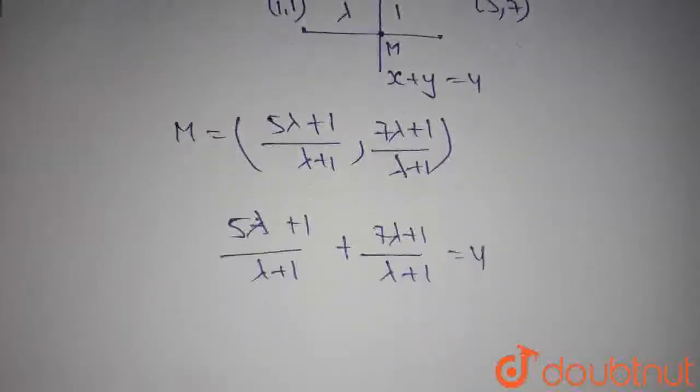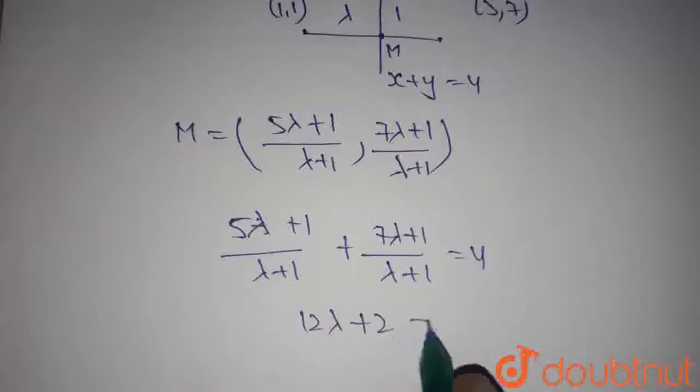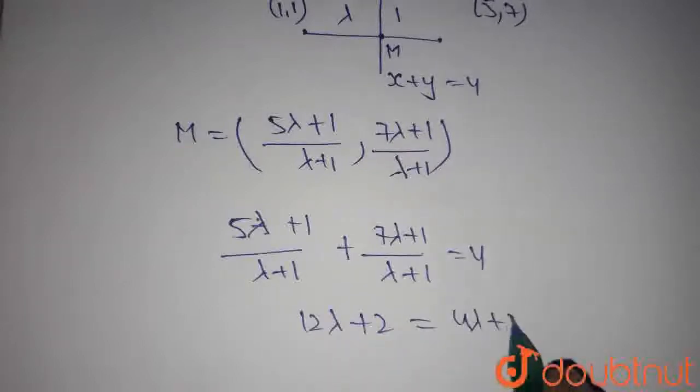If we take lambda plus 1 as LCM, we get 12 lambda plus 2 equals 4 lambda plus 4.